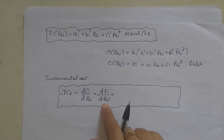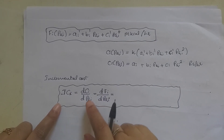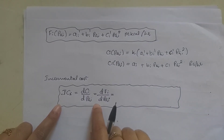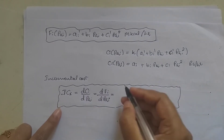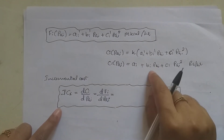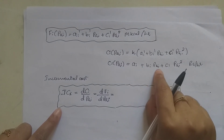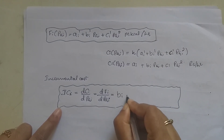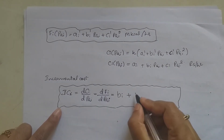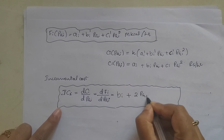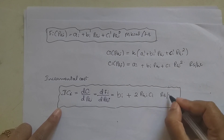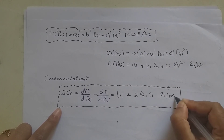Next, incremental cost is the differentiation of Ci with respect to PGi. When we differentiate Ci(PGi) = Ai + Bi × PGi + Ci × PGi², the differentiation of the constant Ai is 0, giving us: dCi/dPGi = Bi + 2Ci × PGi. The unit is rupees per megawatt hour.